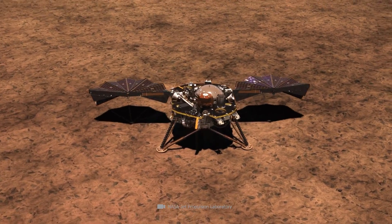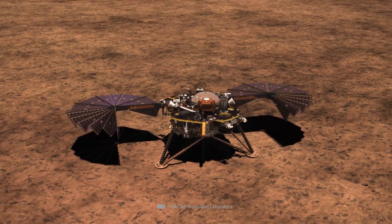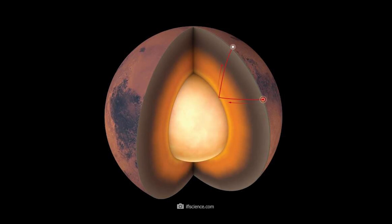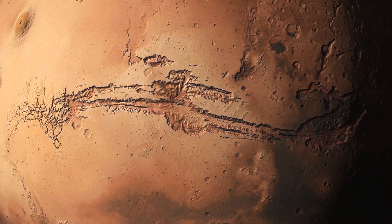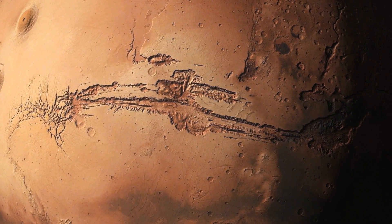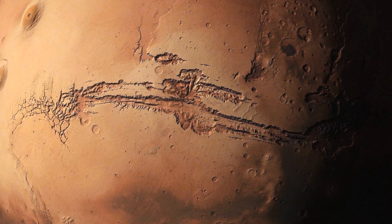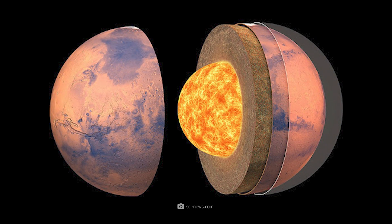The lander was developed specifically to find out what exactly is going on inside the planet and how the core of Mars is structured. Now, you may think that this is not as exciting as exploring the surface and searching for traces of life or water. But the core has it in itself.